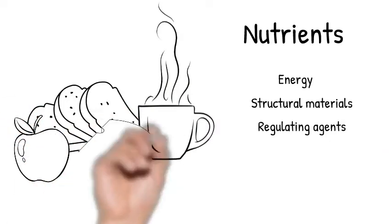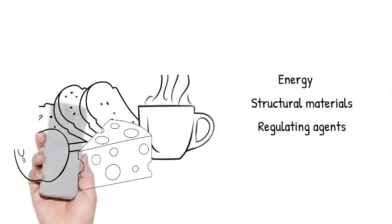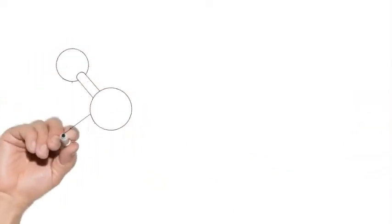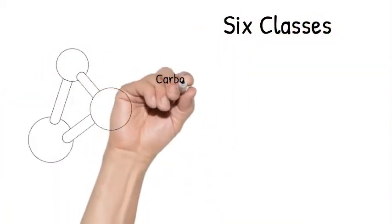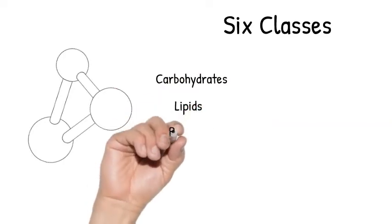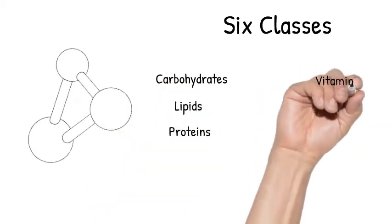Essential nutrients are those that we need to get from our foods and beverages to survive. There are six classes of nutrients. They include carbohydrates, lipids also known as fats, proteins, vitamins, minerals, and water.